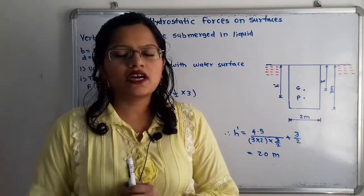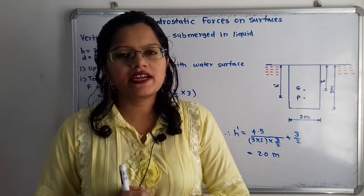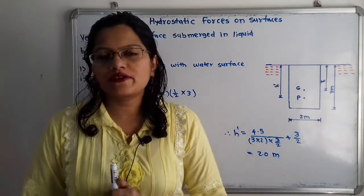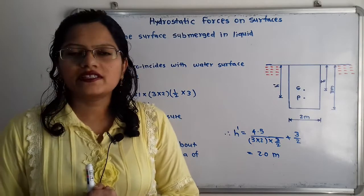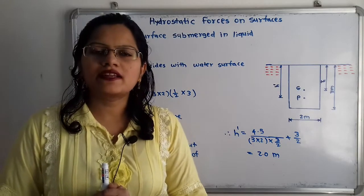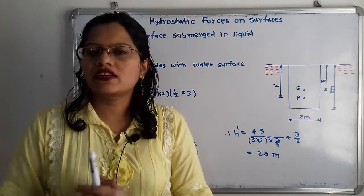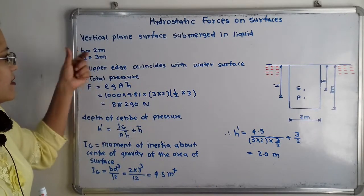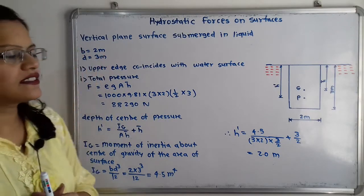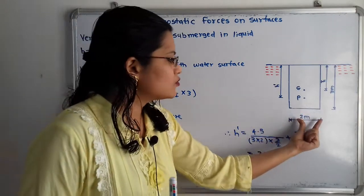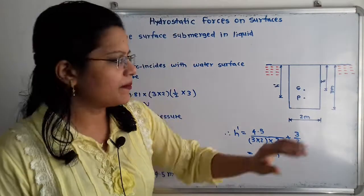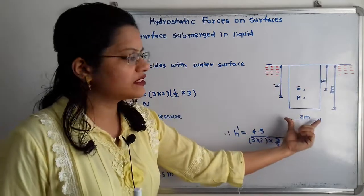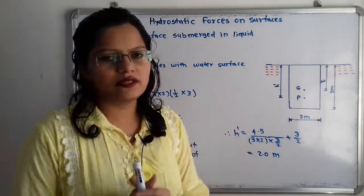Let us first understand the diagram related to the given data. This is the type of hydrostatic forces problem where the surface is rectangular and submerged in liquid in the vertically downward direction. The breadth (width) is given as 2 meters and the depth is 3 meters, so we draw a shape with width 2 meters and depth 3 meters.